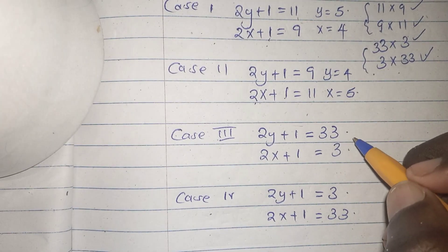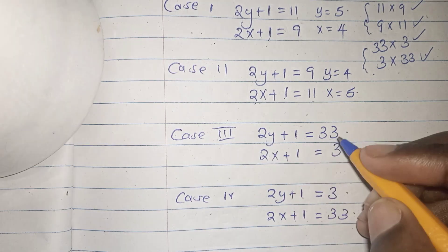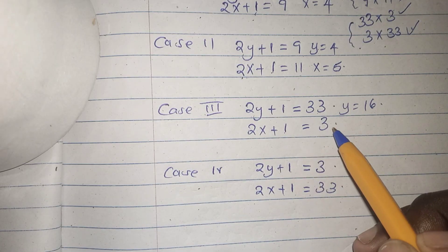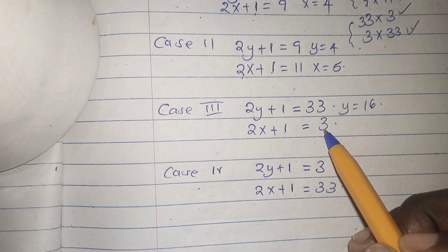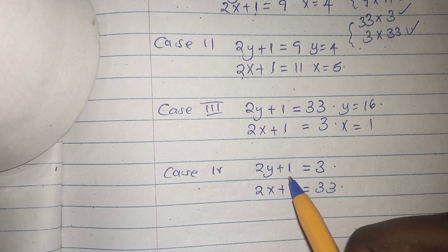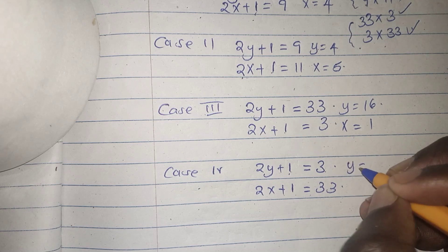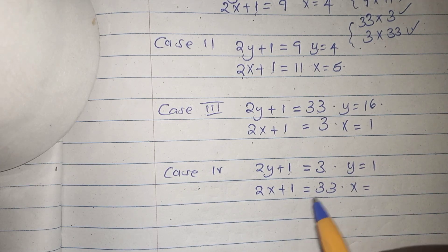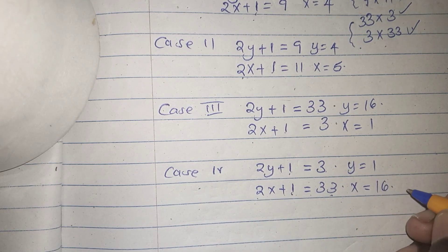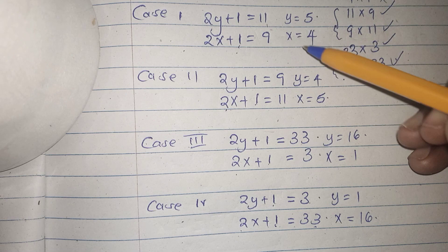Solving Case 3: y equals 32 divided by 2, so y equals 16; x equals 2 divided by 2, so x equals 1. Solving Case 4: y equals 2 divided by 2, so y equals 1; x equals 32 divided by 2, so x equals 16.